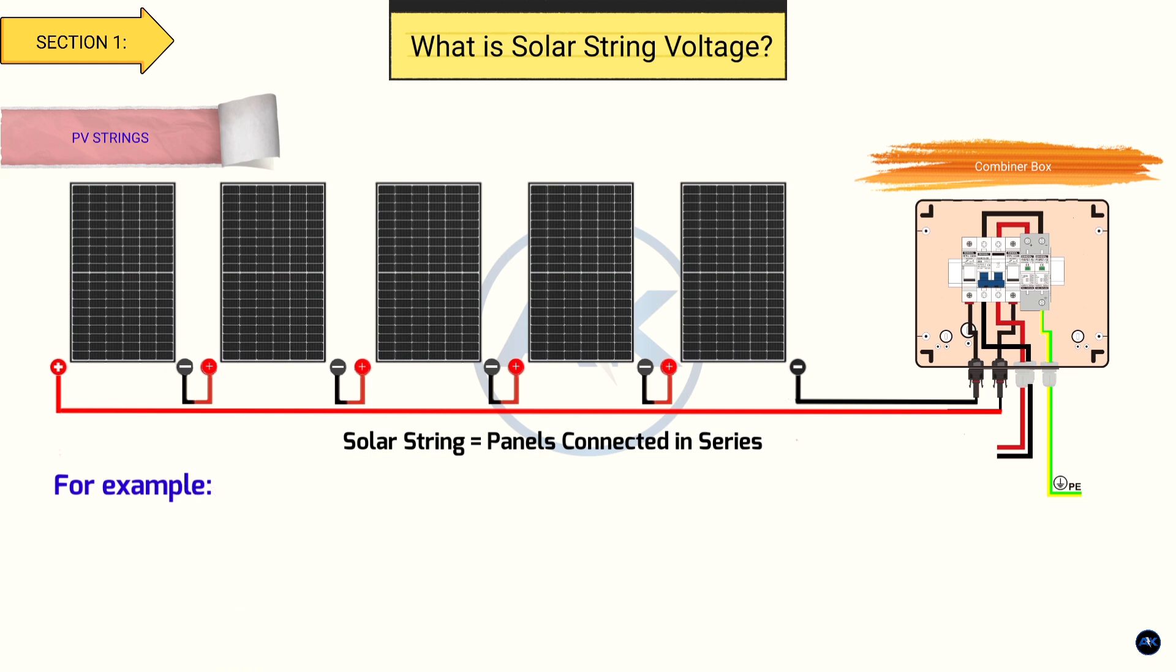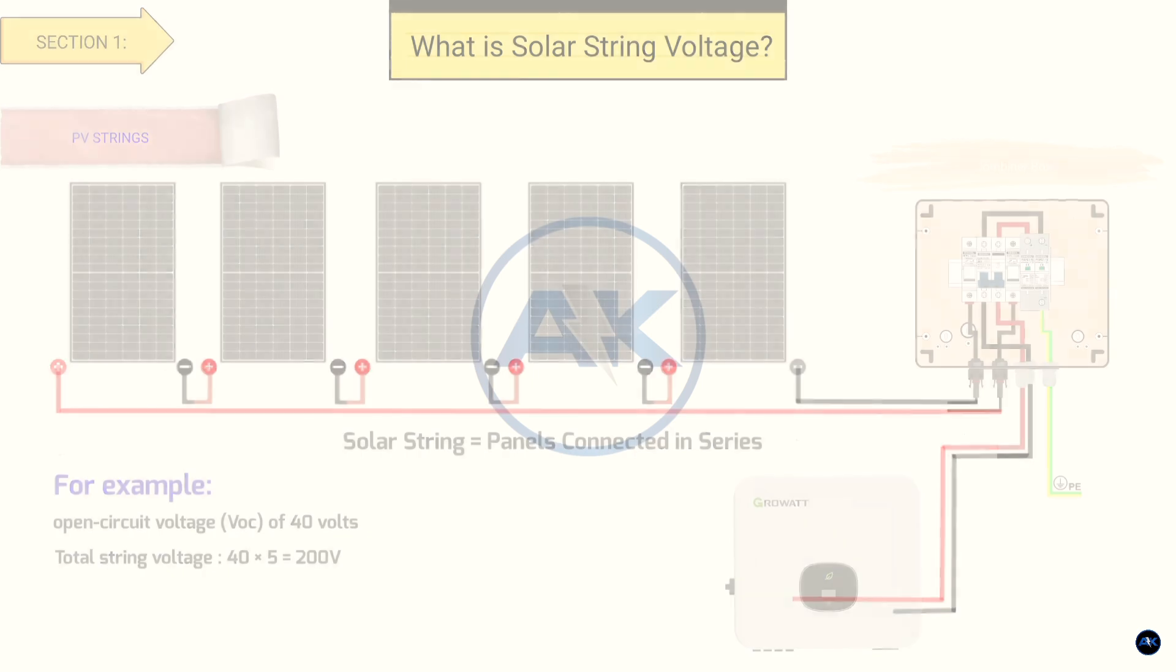For example, if you have 5 panels, each with an open circuit voltage of 40 volts, the total string voltage would be 200 volts. Simple, right? But here's the catch, every solar inverter has a maximum input voltage limit. Exceeding that limit can damage your inverter or even void your warranty.